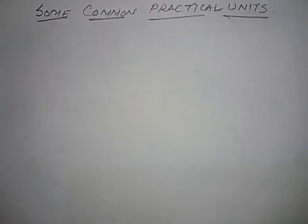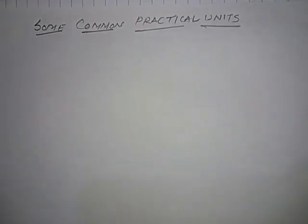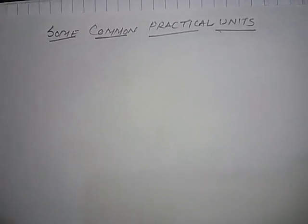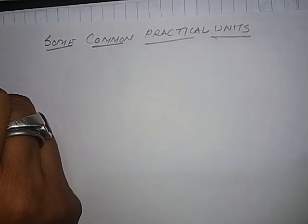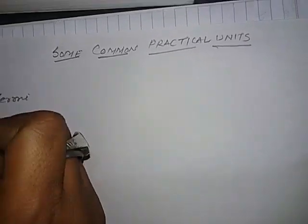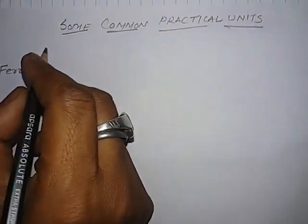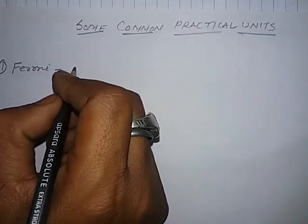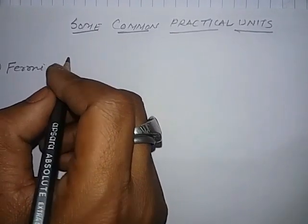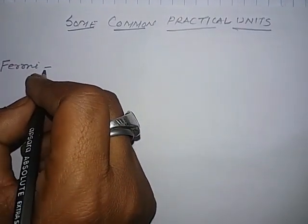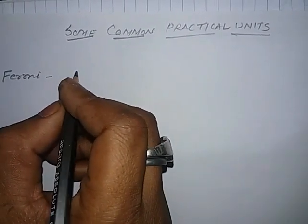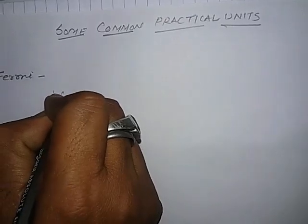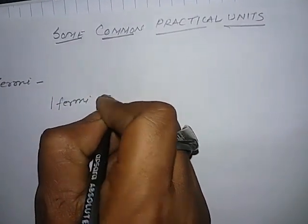Units for small distances. First one is Fermi - a small practical unit of distance used to measure the size of a nucleus. One Fermi equals 10 to the power minus 15 meters. Second one is Angstrom, which is used to